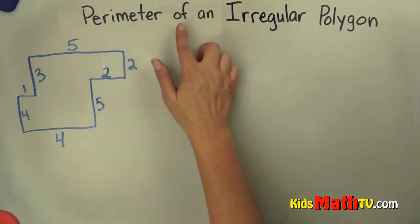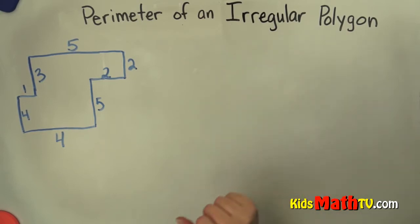In this lesson you will learn about the perimeter of an irregular polygon. So here we have this polygon and it's kind of, well it's irregular, it's not the same on every side.